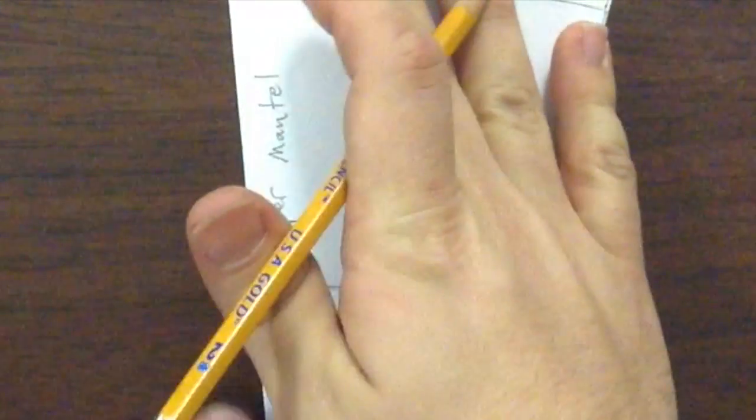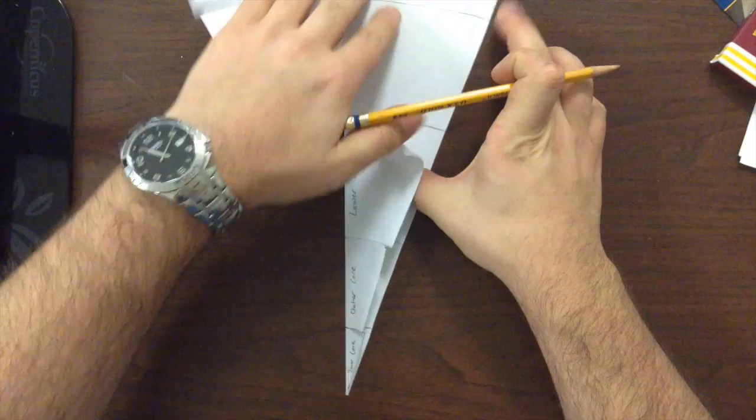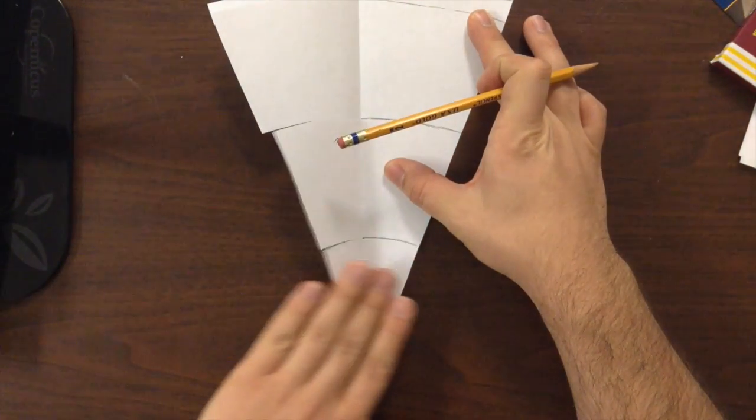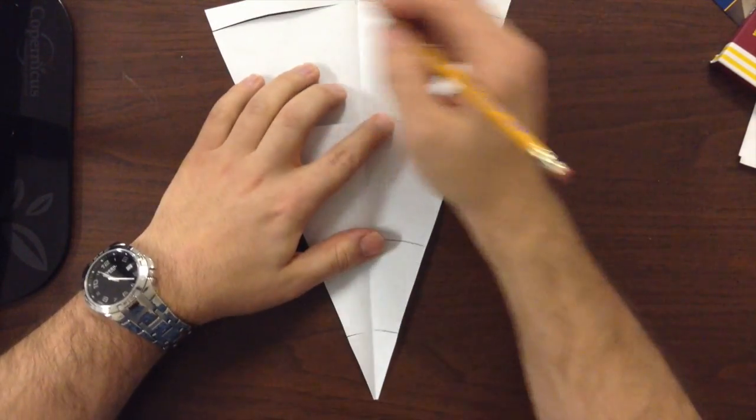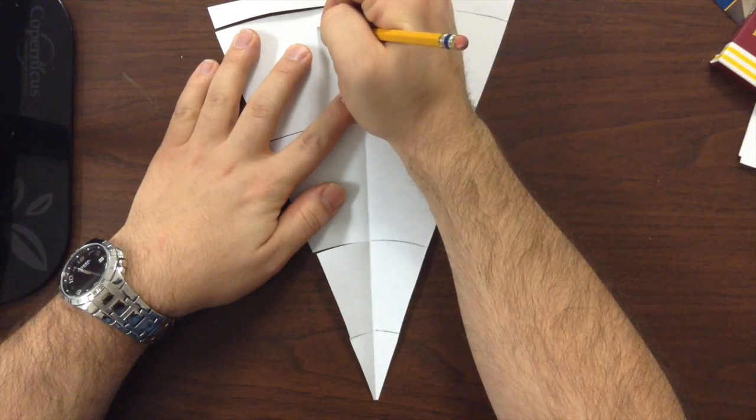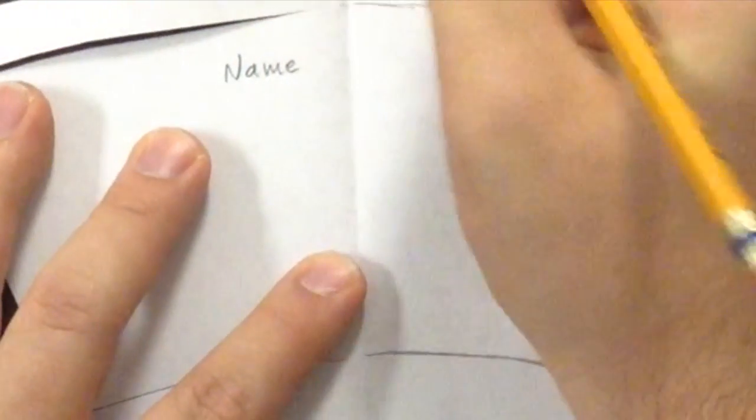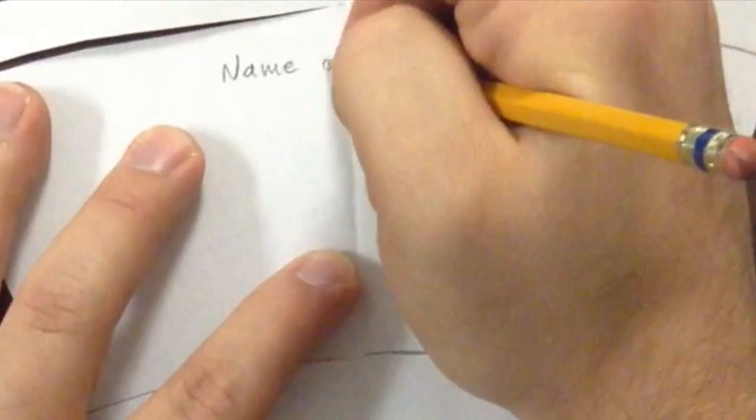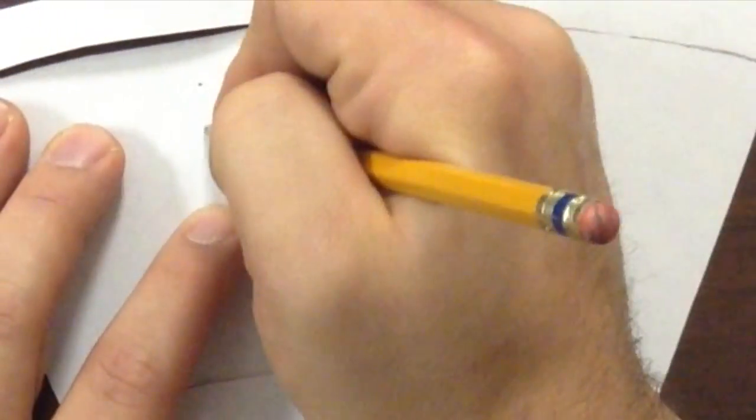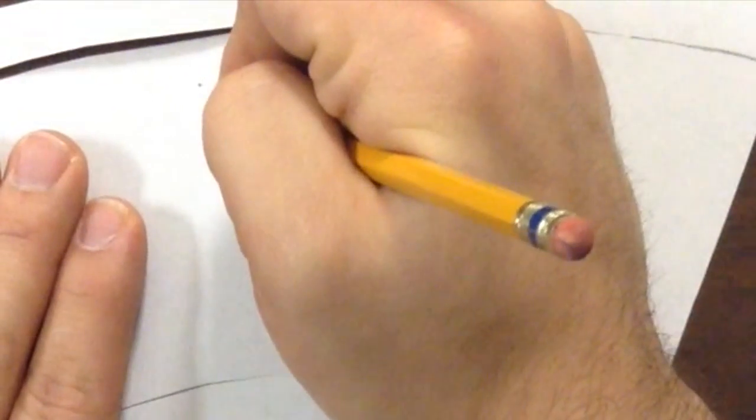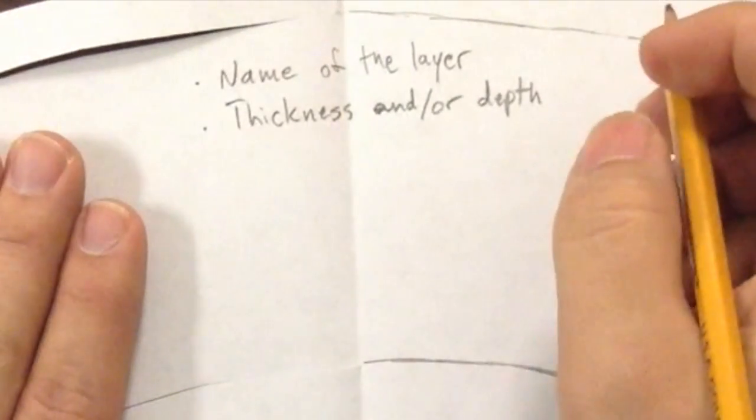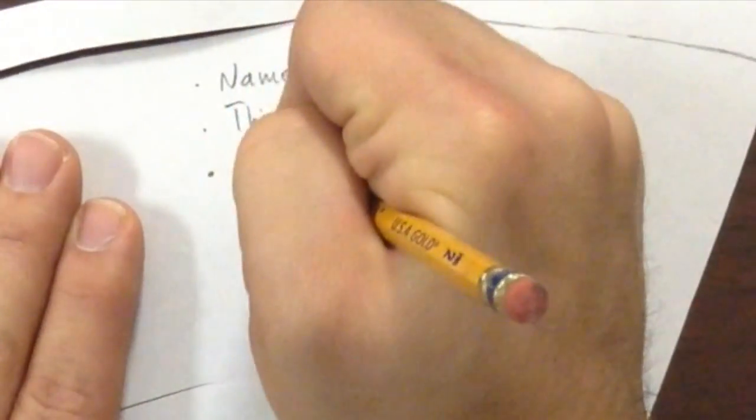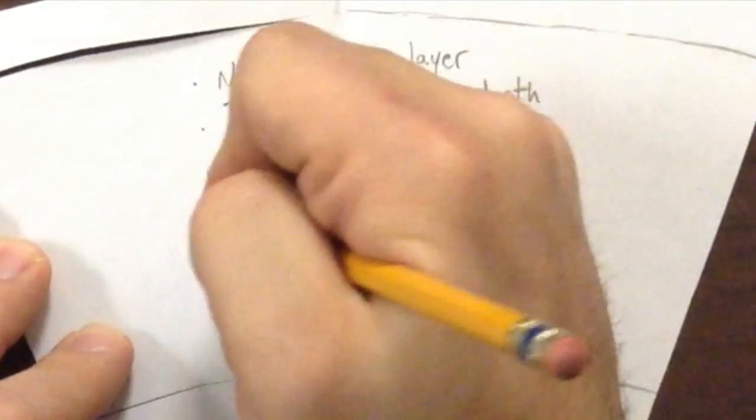So now you have all the parts labeled on the outside. On the inside of each section, you need to write the name of the layer, the thickness and or depth, the composition, and the temperature.